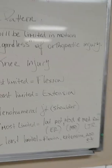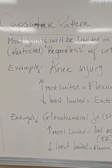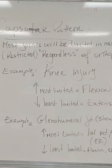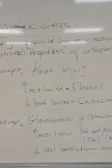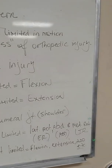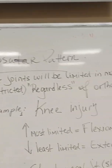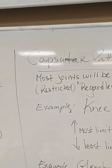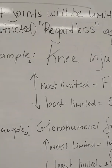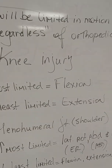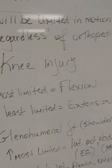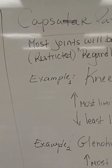Capsular pattern is basically limitations that all your joints are going to show regardless of your orthopedic injury. I put 'regardless' in quotations because nothing we do is very black and white. For example, whether I have an ACL injury or a meniscus injury, regardless of the underlying injury, I'm going to have a pattern capsular to my joint. For the knee, you'll be most limited when trying to flex.